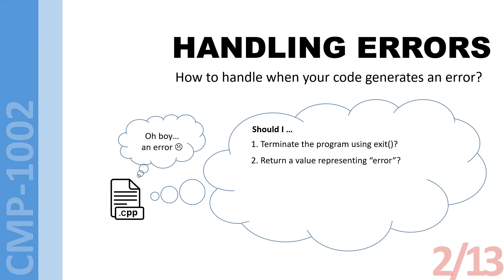Another approach, especially common among C programmers, is returning a value representing an error. Within a function, when it realizes there is an error, it can return an error value so that whoever called the function can get this value and check if it is the error value, and if so, do something special. In C, this is a very common practice because there is no exception handling mechanism. Therefore, returning an error-representing value is a very viable option.